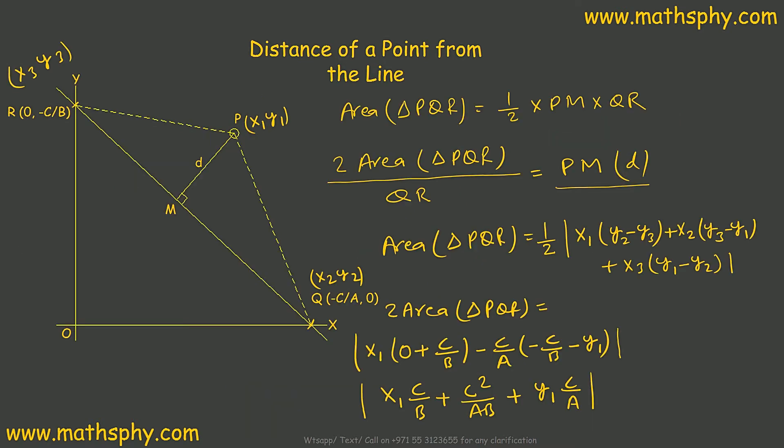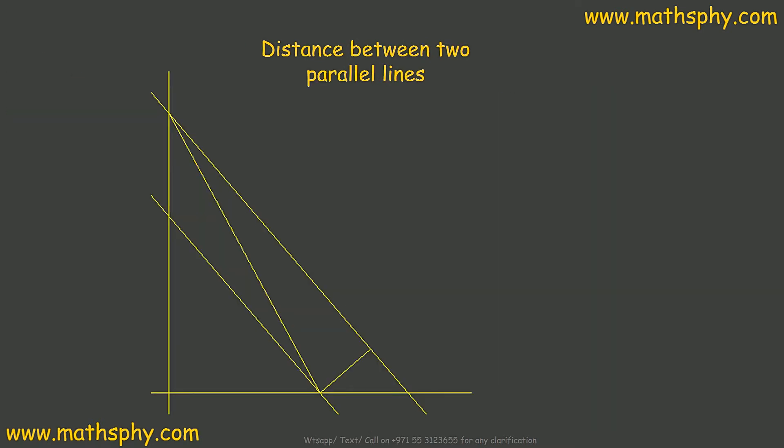Now here it says distance between two parallel lines. We have this line, let's take it as l1, and this line as l2. This is the perpendicular distance. Let's take this point as P, this as Q, and this as R.